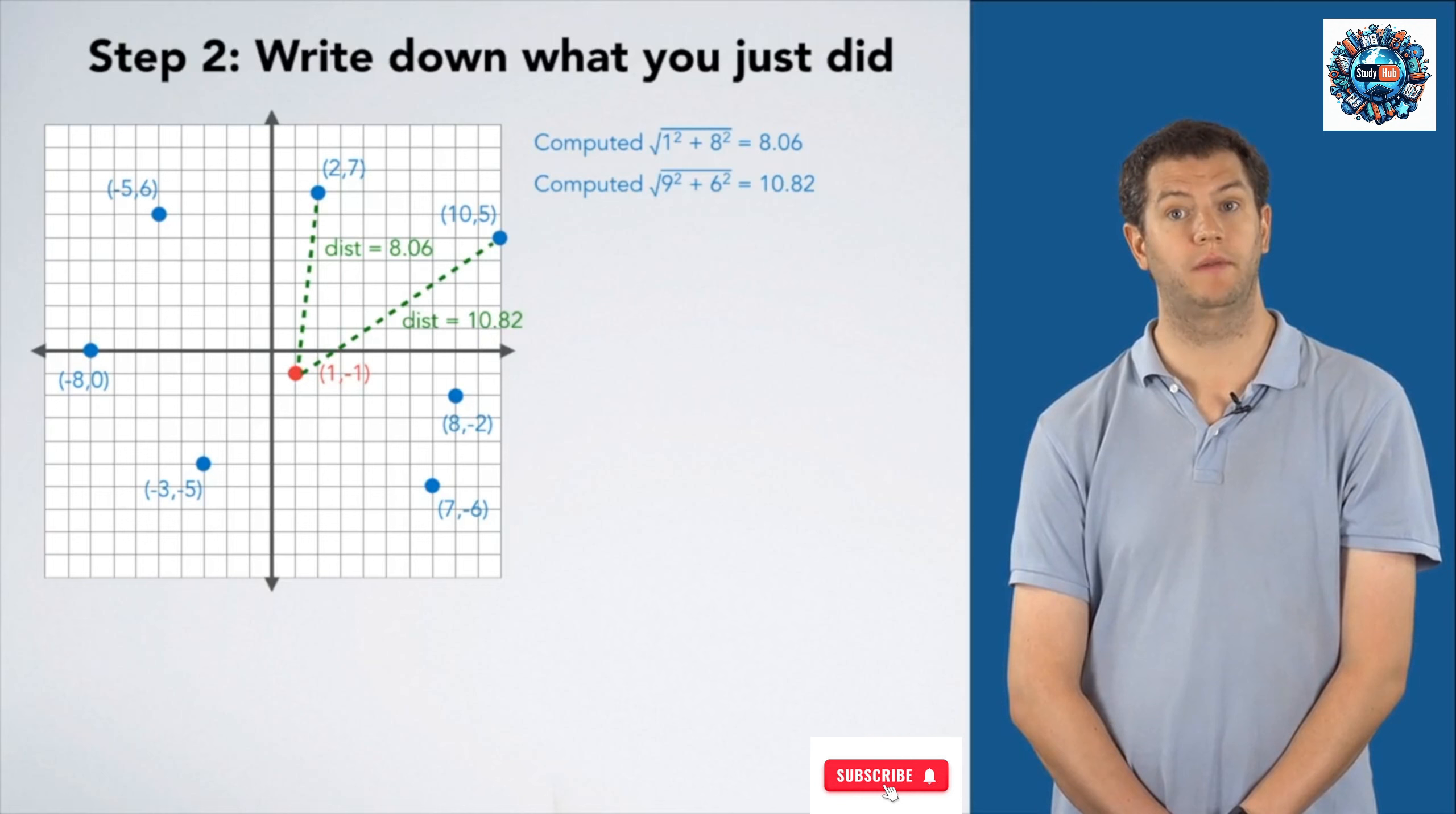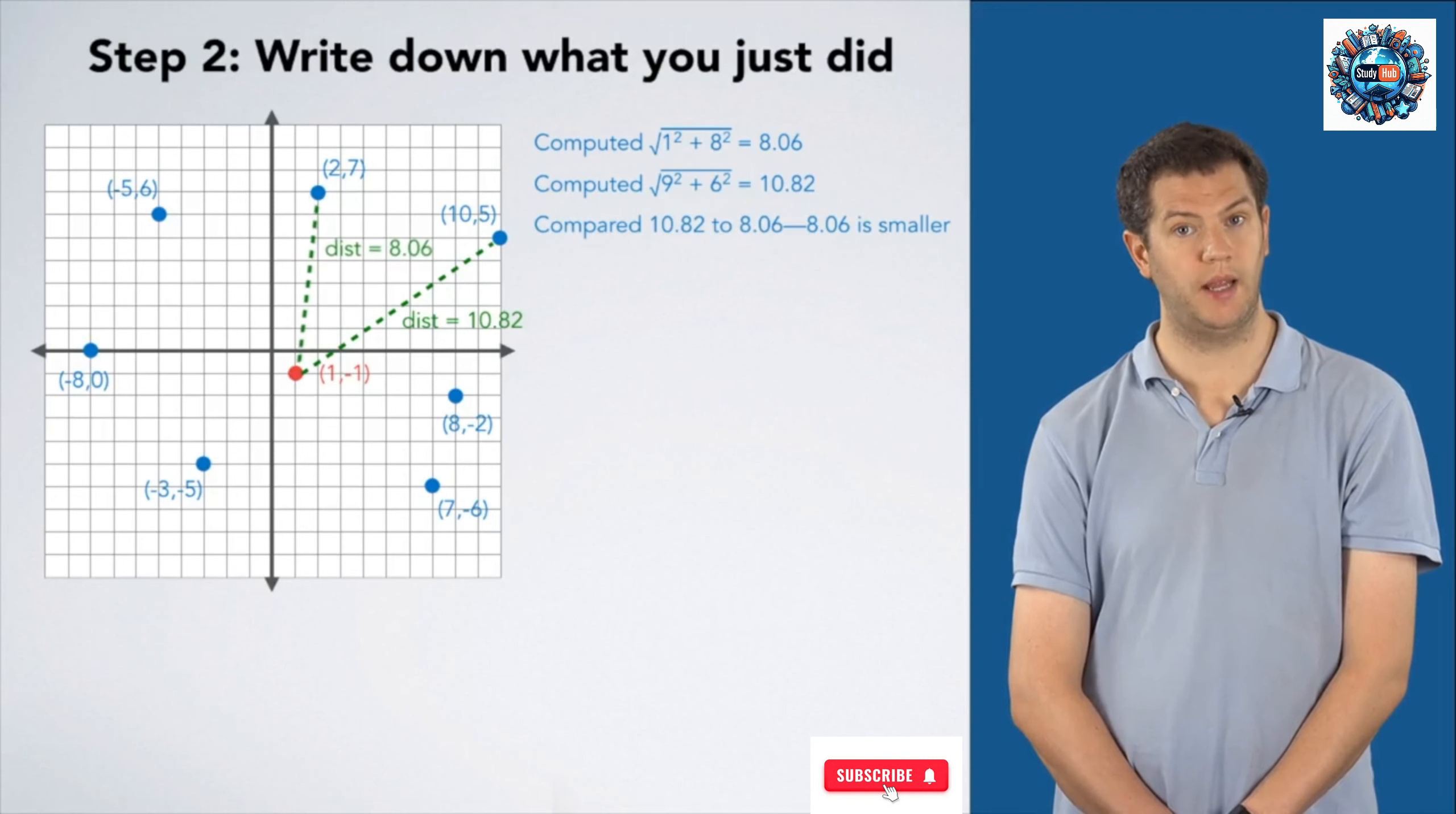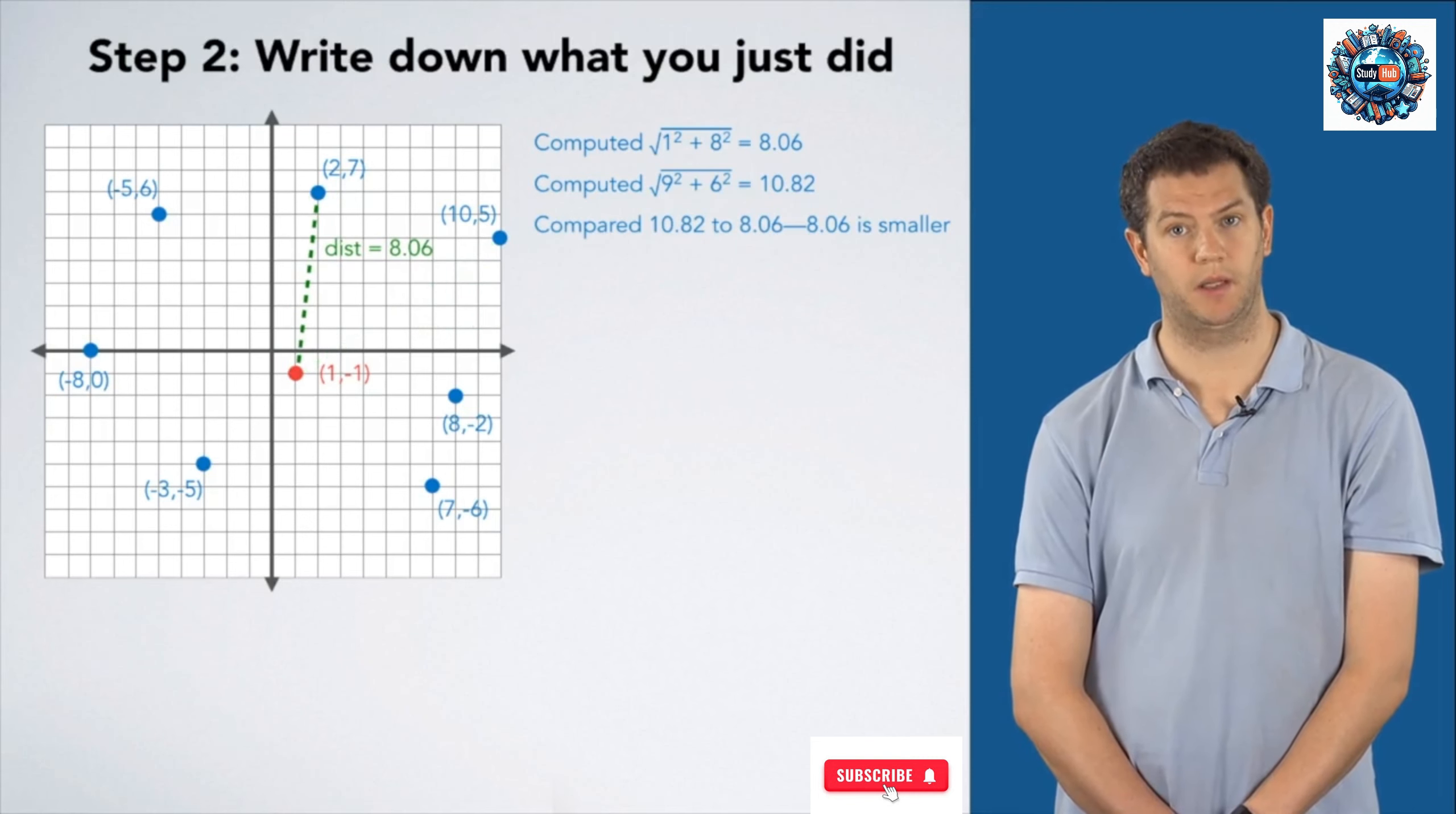I computed the square root of 9² + 6², and got 10.82. And, I compared 10.82 to 8.06, and said 8.06 is smaller.